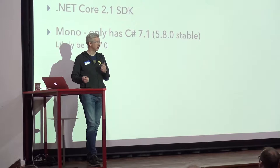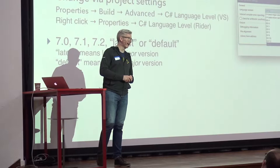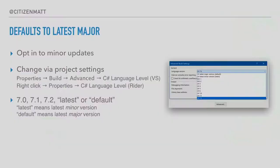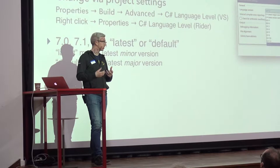One of the interesting things with the point releases is that you don't get them by default — they're off by default. The project system defaults you to the latest major release, so you have to opt in. The idea is that if you have different team members on different levels of tooling, you don't want them to have different compiler features. You have to explicitly opt in, and by default you get 7.0.